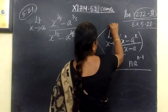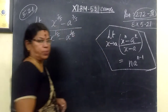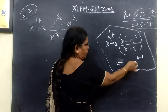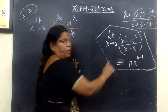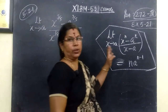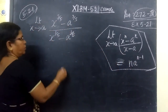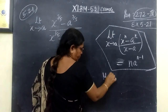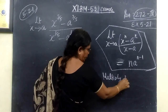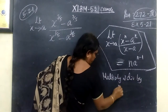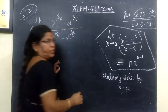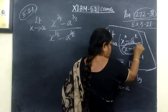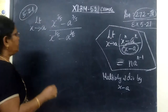In this formula, we need to apply n · a^(n-1). The denominator needs to be in the form (x - a). So what do we do? We multiply and divide by (x - a). The purpose is to get (x - a) in the denominator so we can apply the standard limit formula.